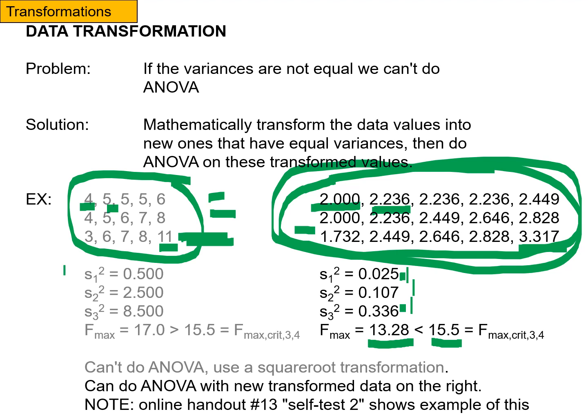All right, so with the original data here, I can't do the ANOVA. With my transformed data here, I can do the ANOVA. And if you go and you're looking online at the handouts and the examples, handout 13, the self-test number two shows an example of this.